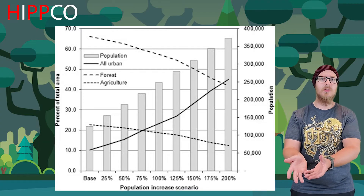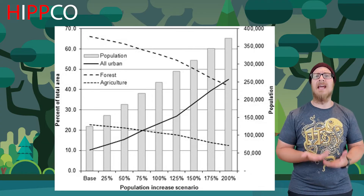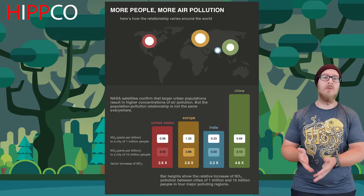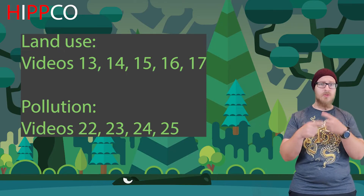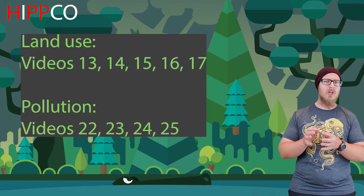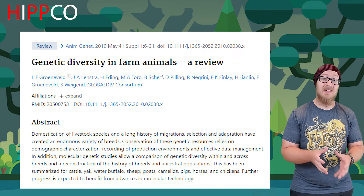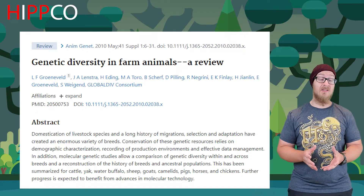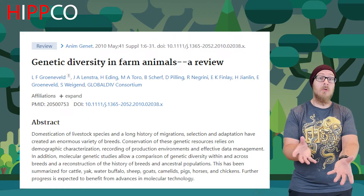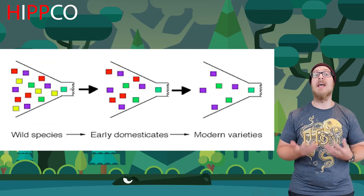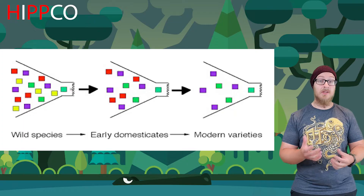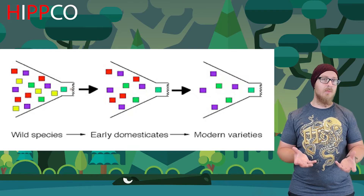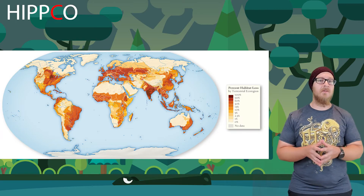Human population growth and the resulting need for more agricultural land, lumber, and mining all lead to habitat destruction. The energy use of a growing population releases greenhouse gases and pollutants. Additionally, a large number of organisms have been completely domesticated by humans and managed for economic return — like cattle, pigs, or honeybee colonies. This domestication has decreased the genetic diversity of these species, since they are artificially selected for whichever traits we like best, reducing the overall gene pool.